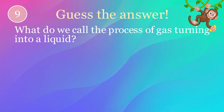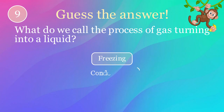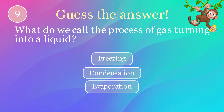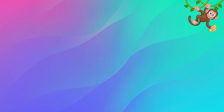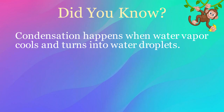What do we call the process of gas turning into a liquid? Options: freezing, condensation, evaporation. The correct answer is condensation. Here's an interesting fact: condensation happens when water vapor cools and turns into water droplets.